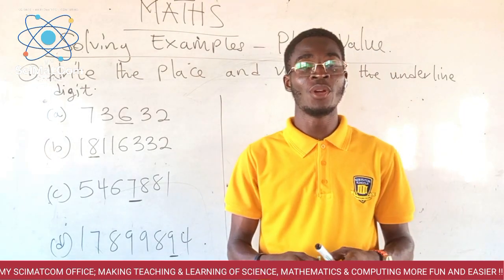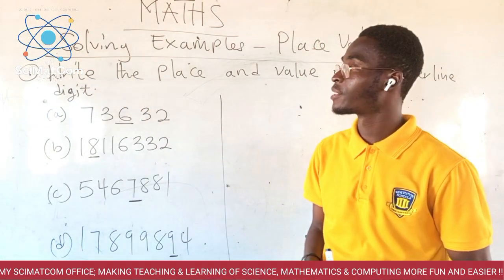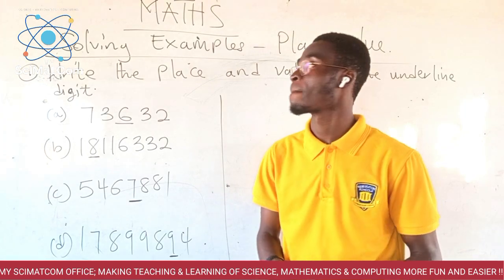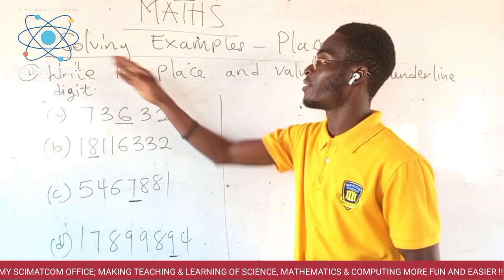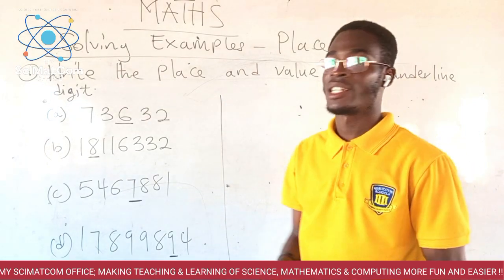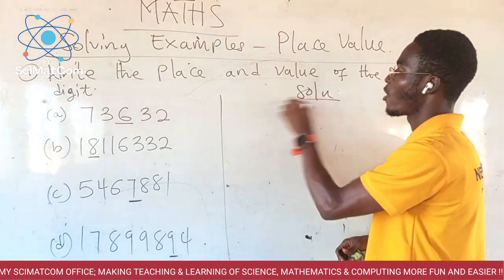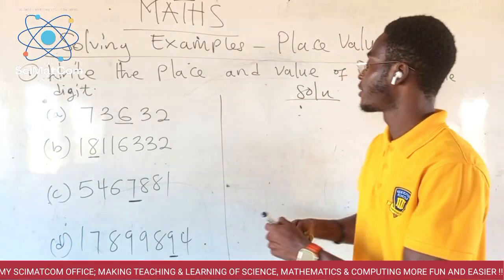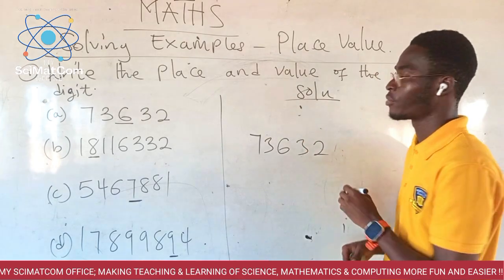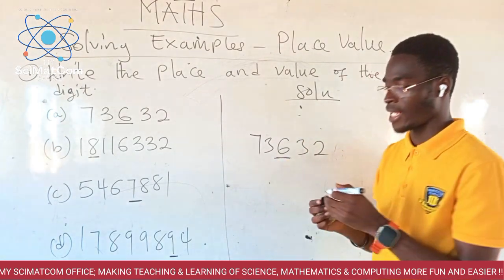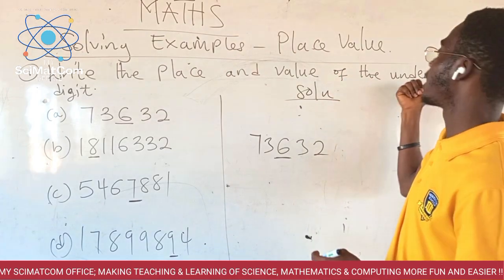We are going to solve examples based on what I've said earlier. We have this example on the board, which we are going to work through to understand it better. Write the place and value of the underlined digits. We have A, B, C, D, and we are going to solve them in that order. So let's take A. We have 7, 7, 3, 6, 3, 2 and the six is underlined. The question is: write the place and the value of the underlined digit.